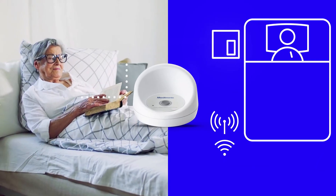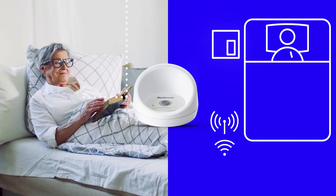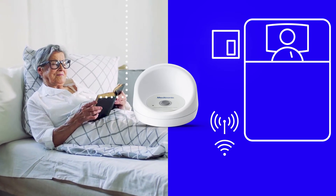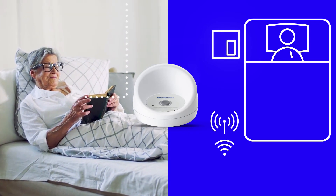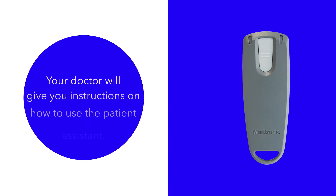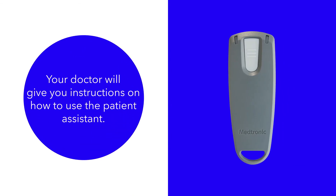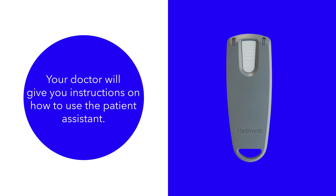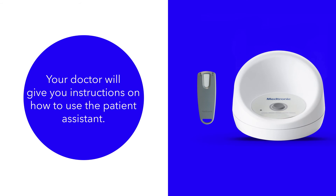Once properly set up, the home communicator will transmit heart rhythm data to your clinic whenever you're within 10 feet of it. Your doctor may also give you a patient assistant to manually mark times that you feel heart discomfort. This information is then sent to your home communicator during your next automatic transmission and then on to your clinic.